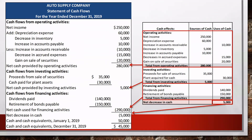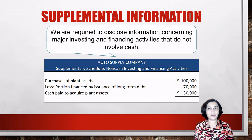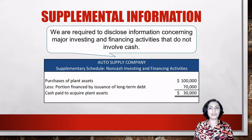Here is our formal statement of cash flows prepared under the indirect method, using information from our worksheet. On the next slide, we will look at a schedule of supplemental information associated with the statement. We are required to disclose information concerning major investing and financing activities that don't involve cash. In the case of this company, the purchase of plant assets was financed using long-term debt, with only a small portion of the acquisition paid in cash.